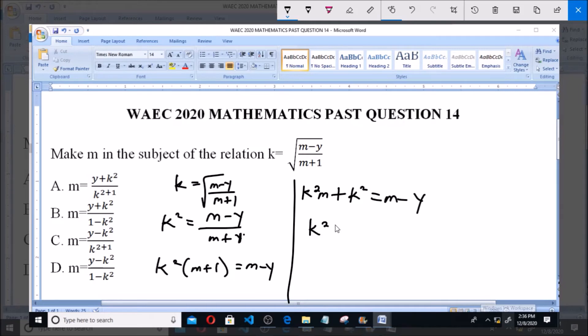k squared plus y equals m minus k squared m. That is, bringing negative y here becomes positive y, then taking positive k squared m here becomes negative k squared m.